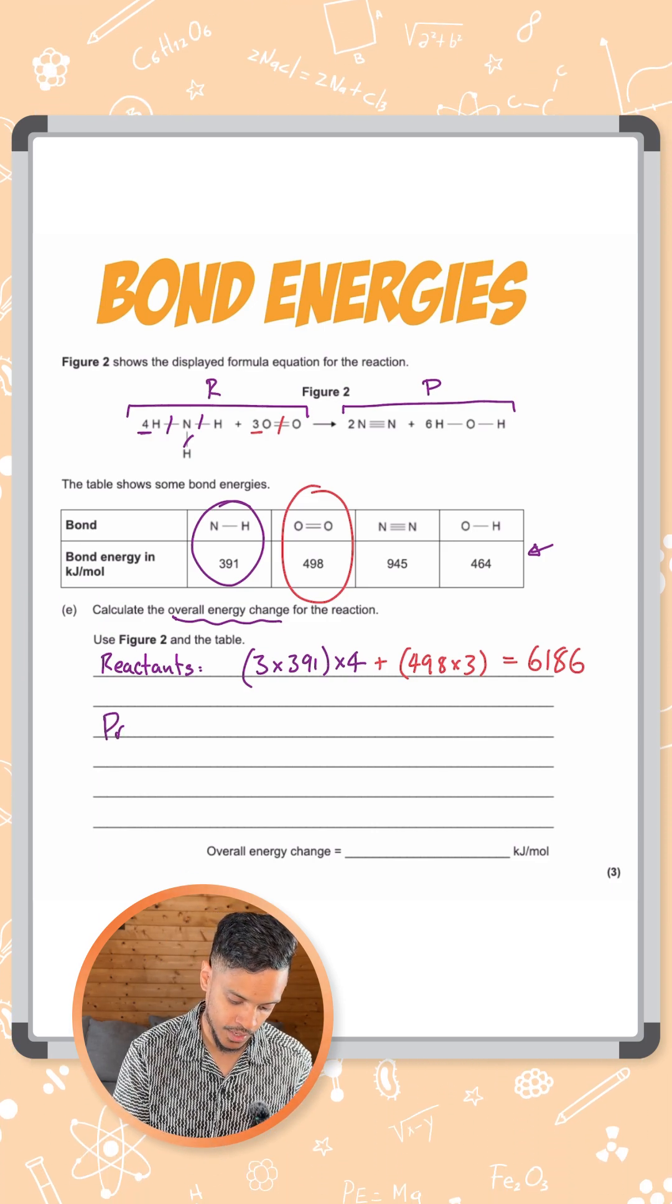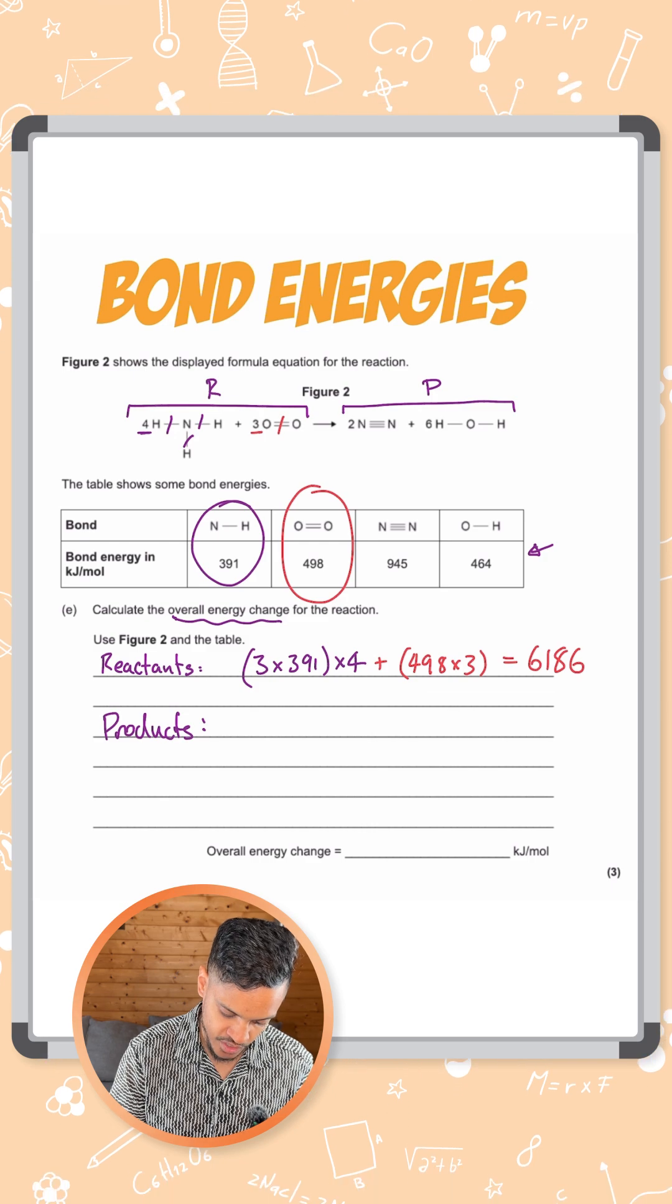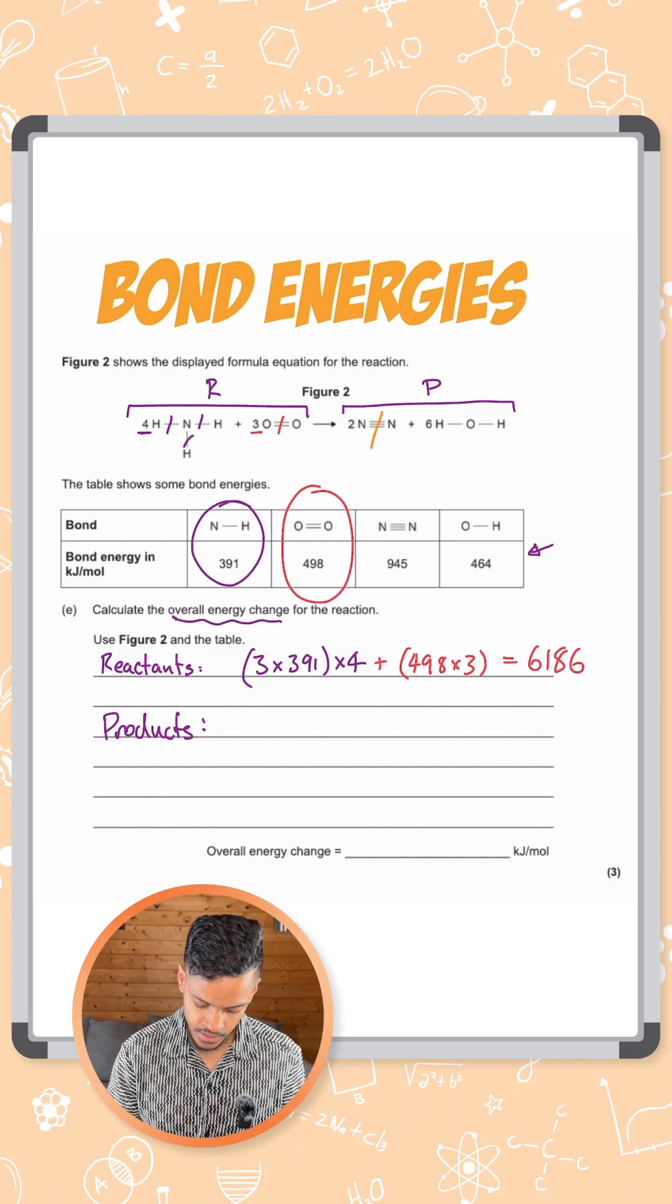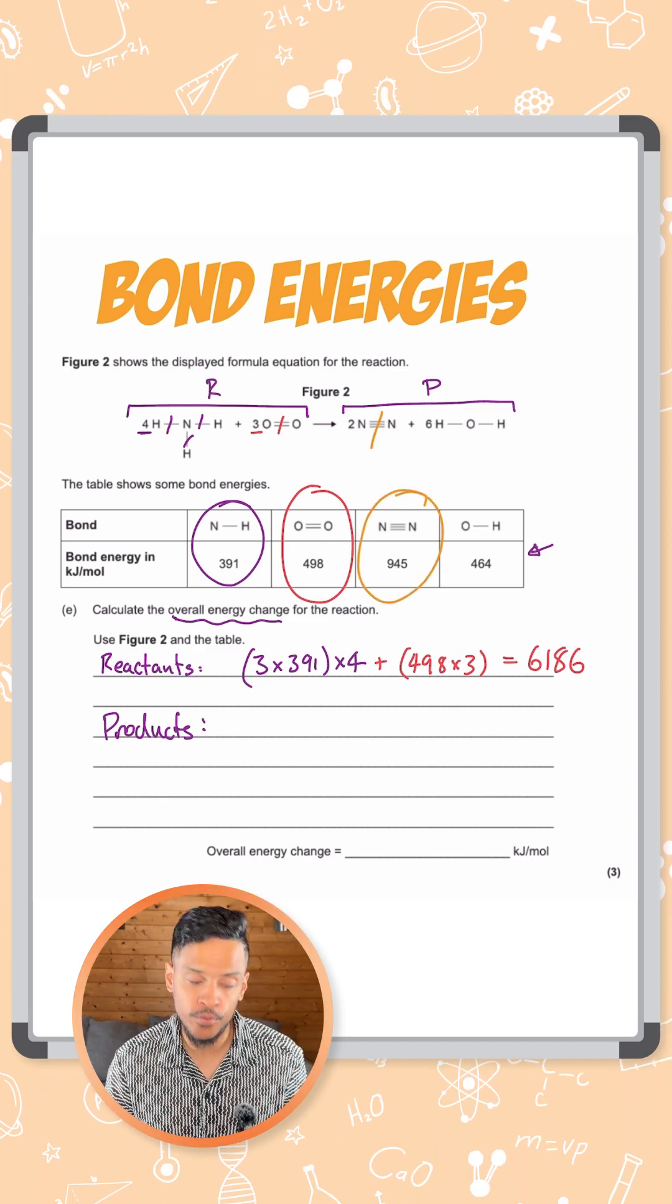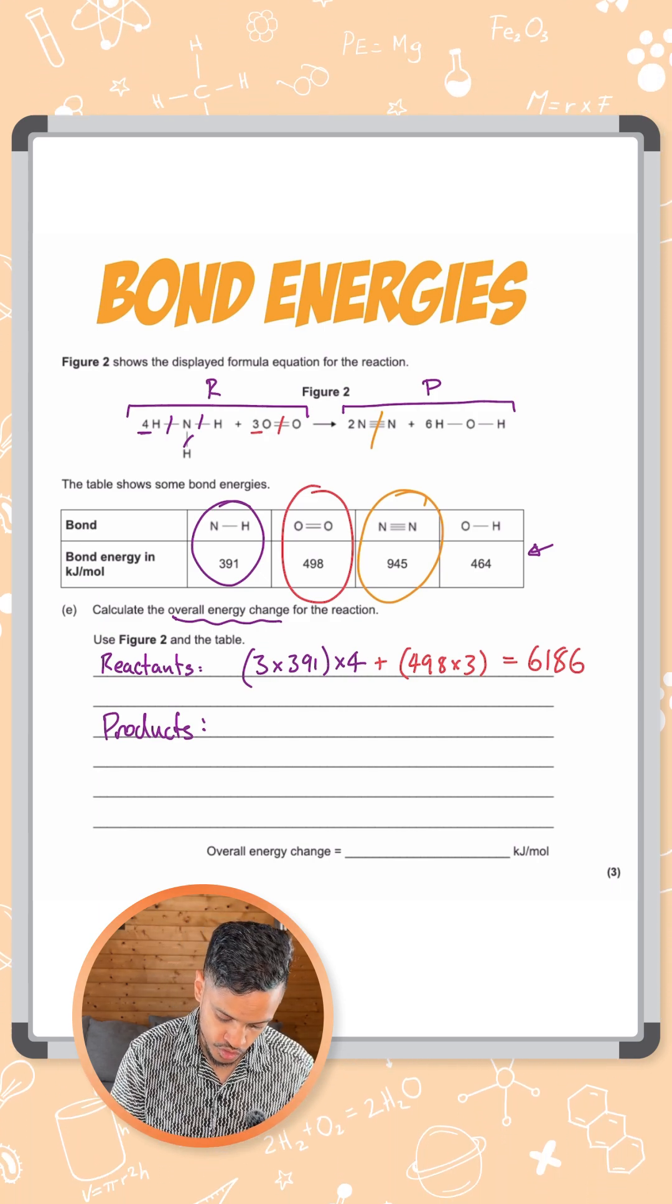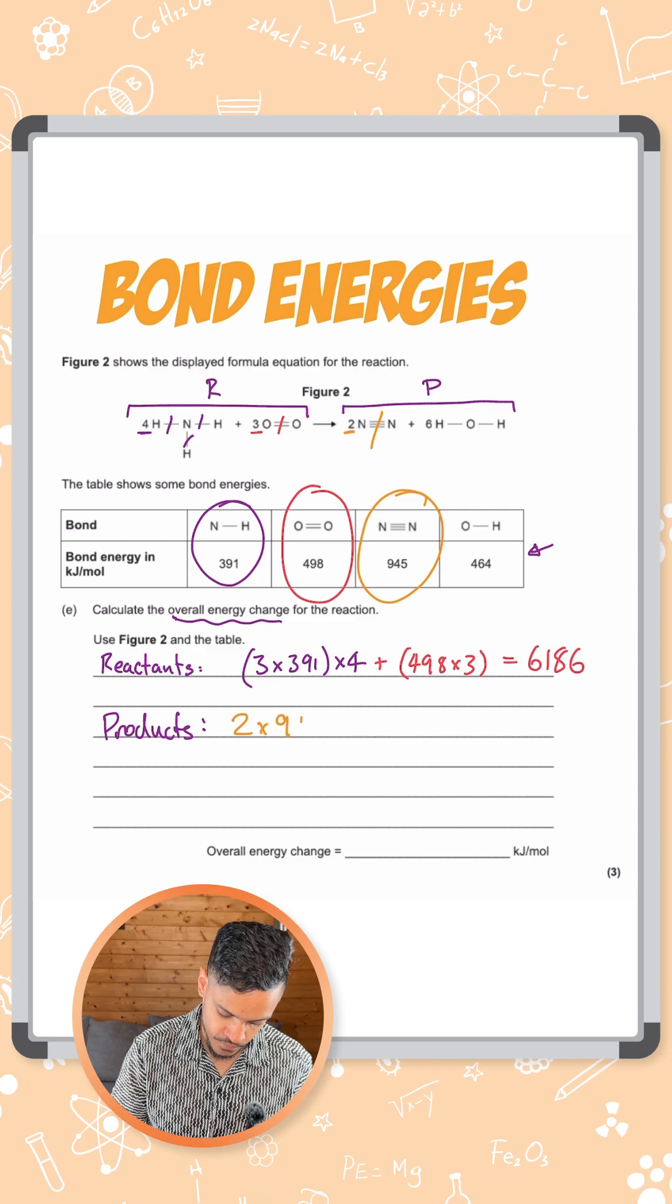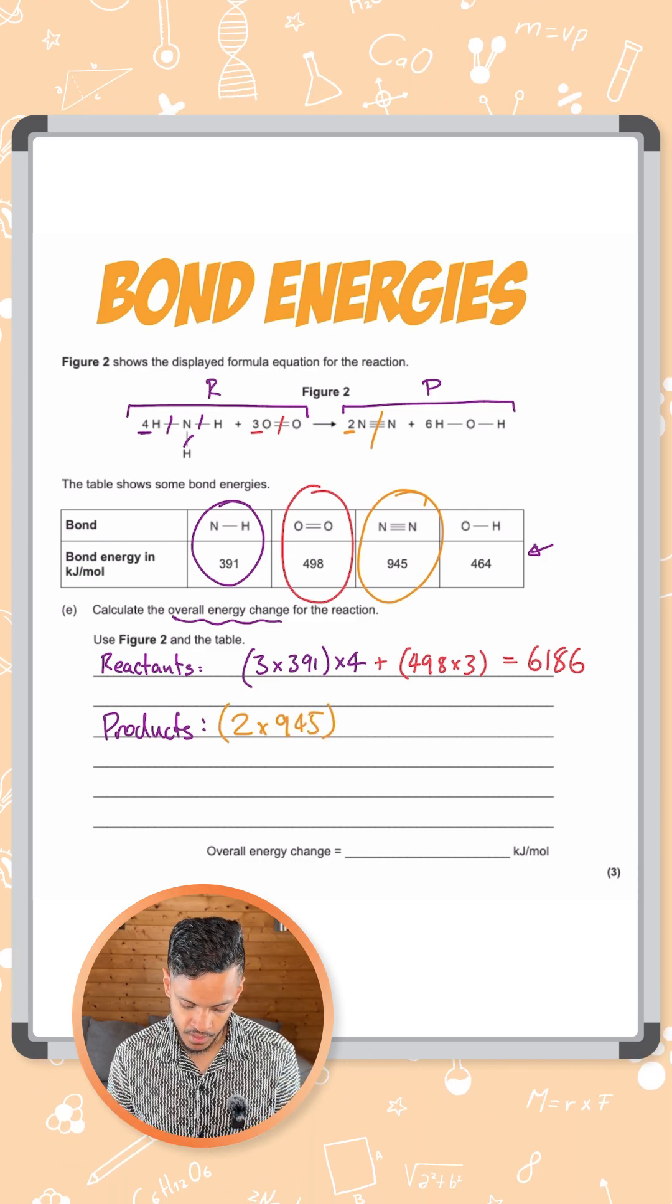We need to do the same for products now. So first thing we've got in products are the N-N bonds, the N triple bond N. That is 945 each, 945 kilojoules per mole. We've got two lots of them. So we do two times 945. That's the N triple bond N done.